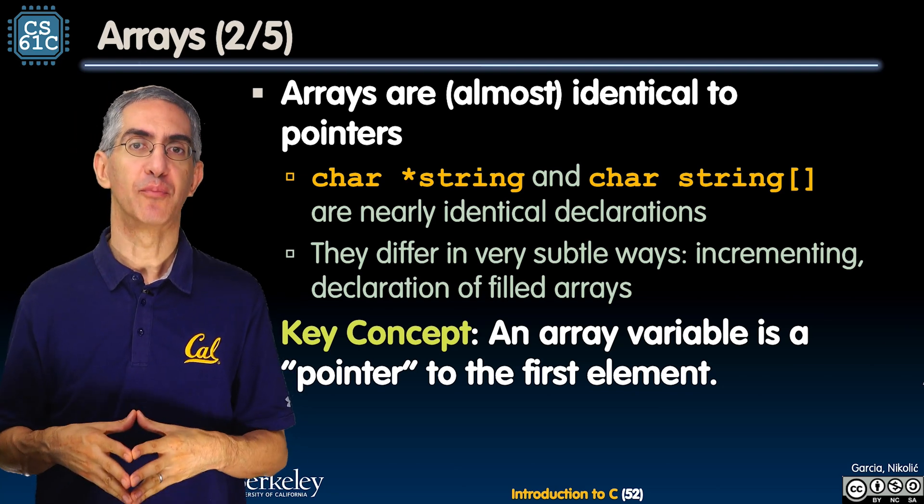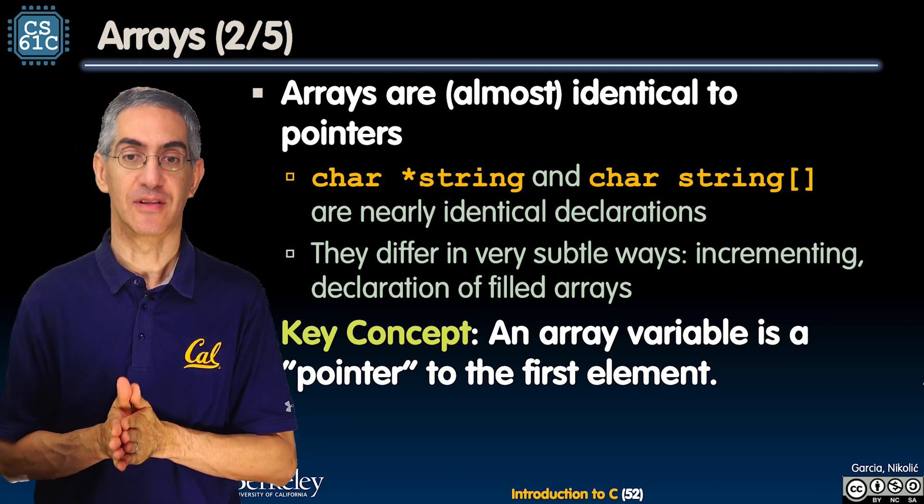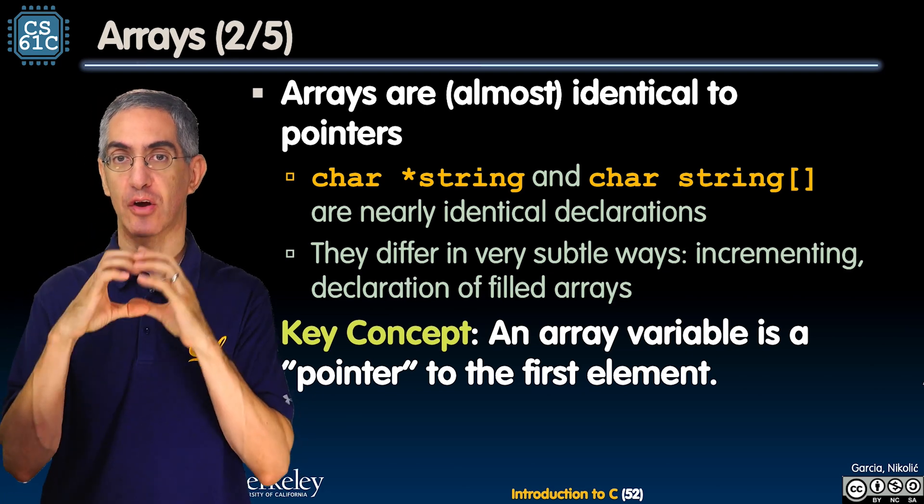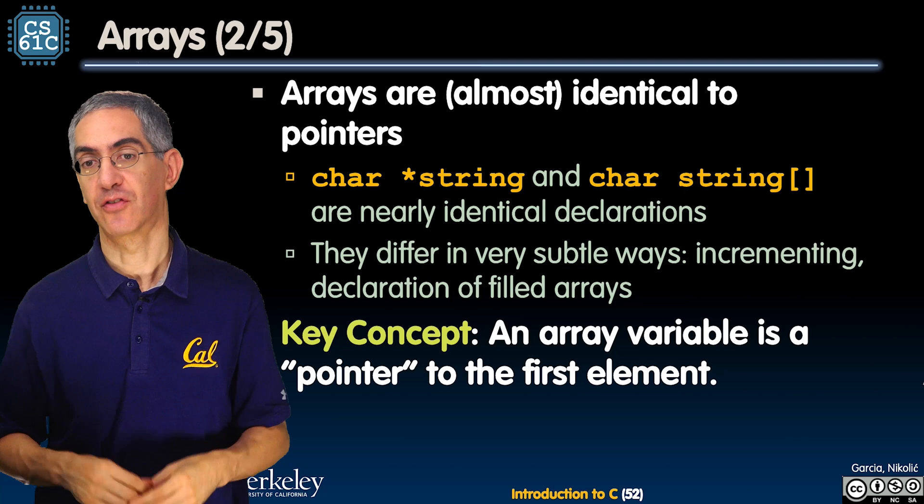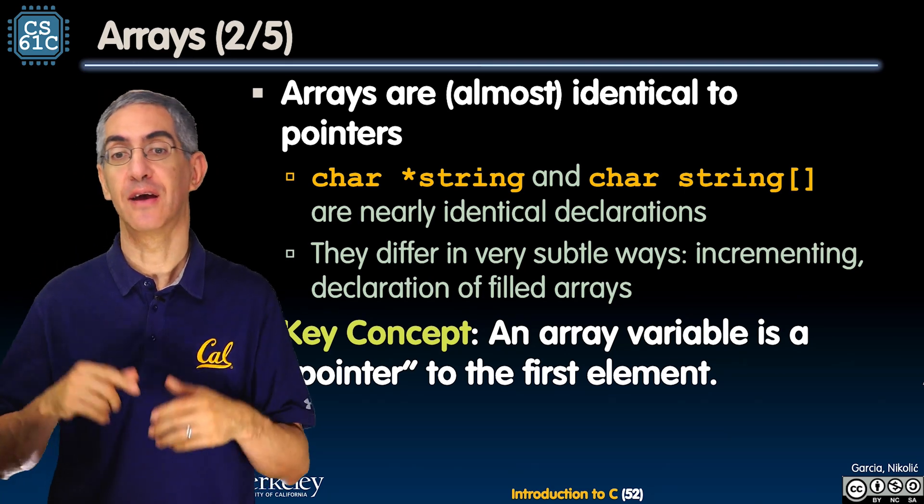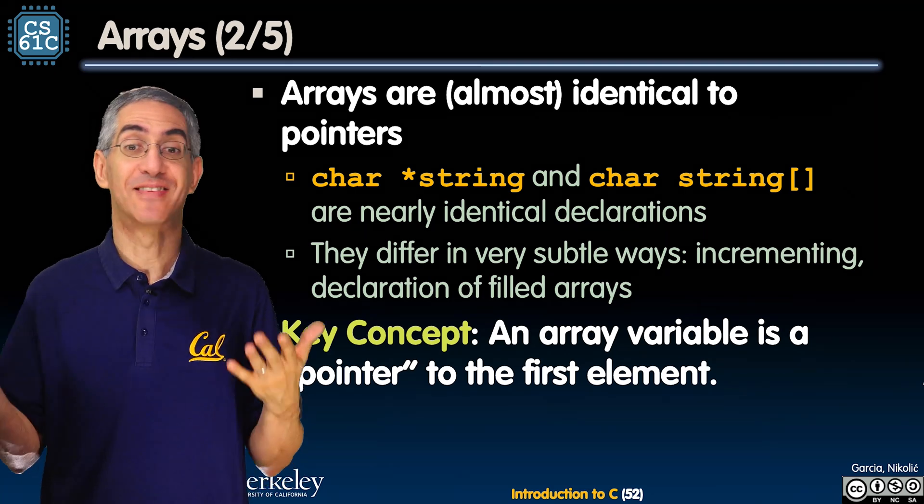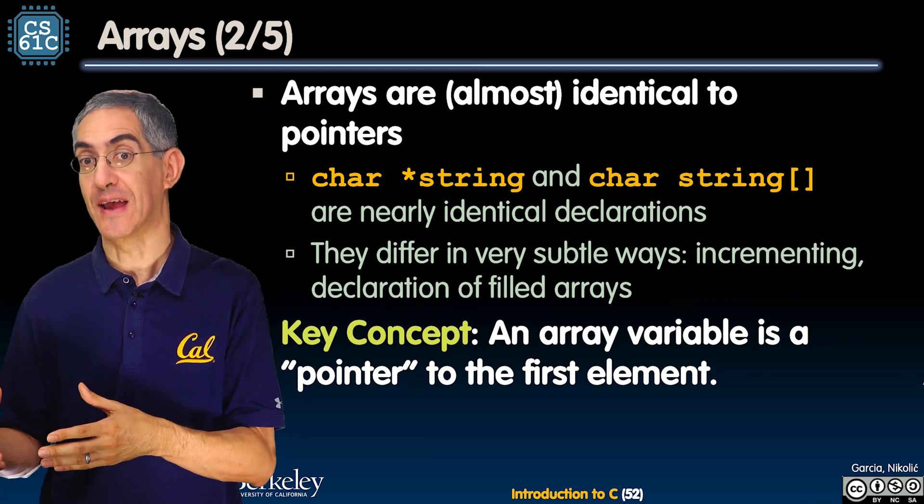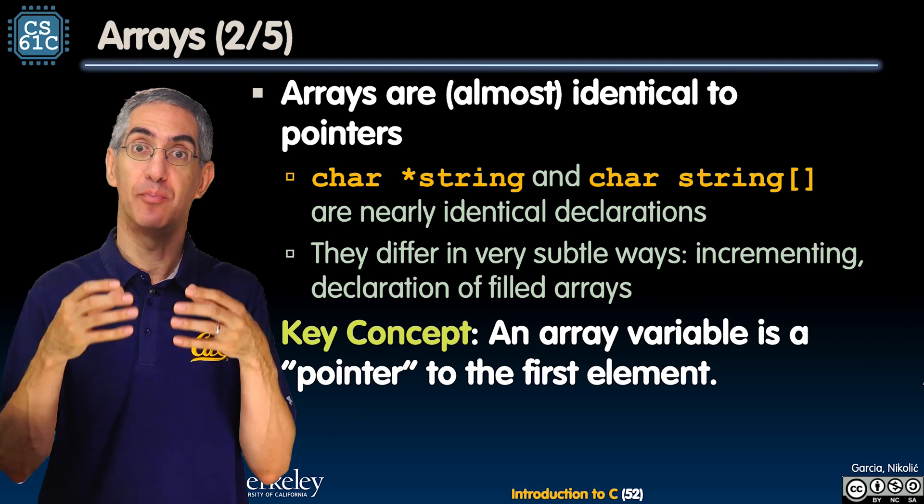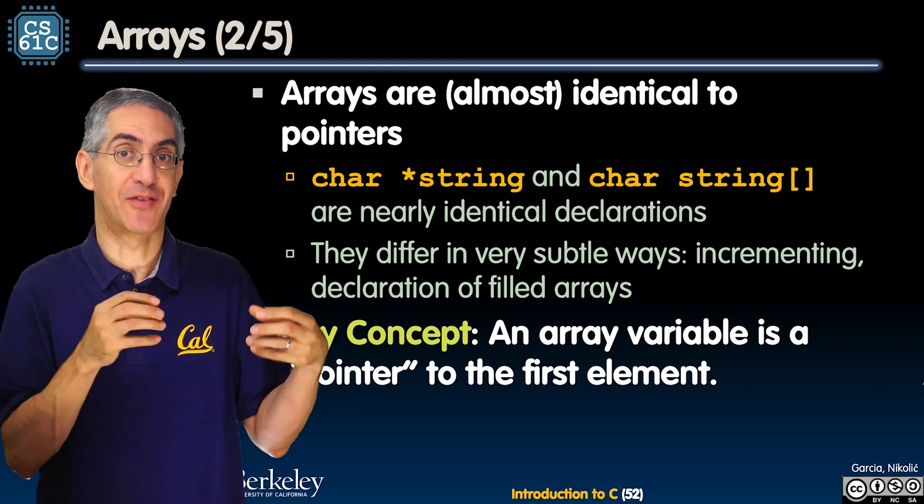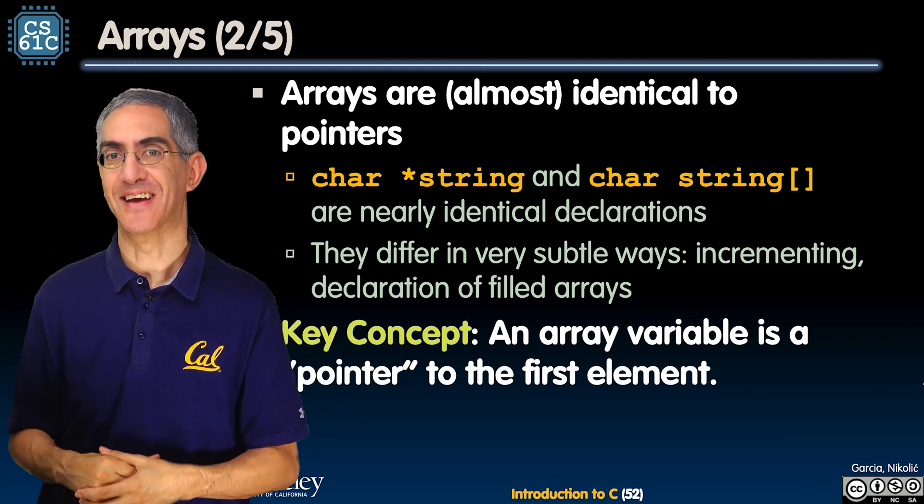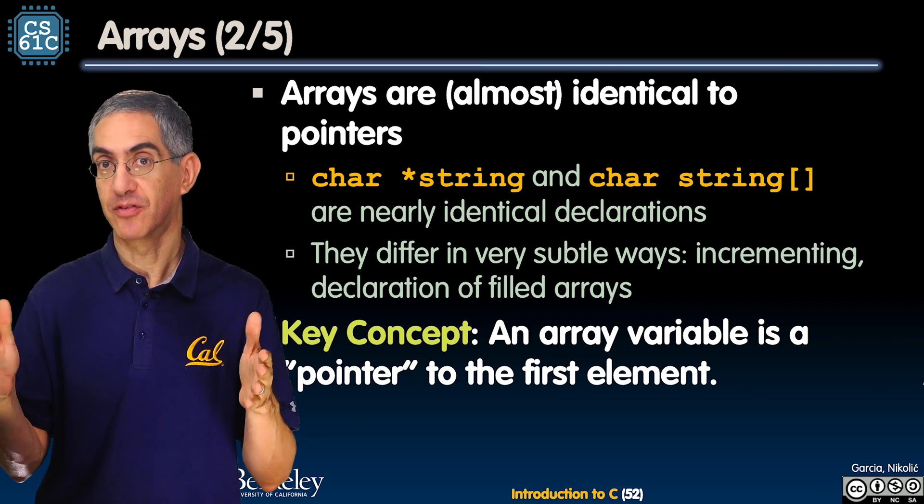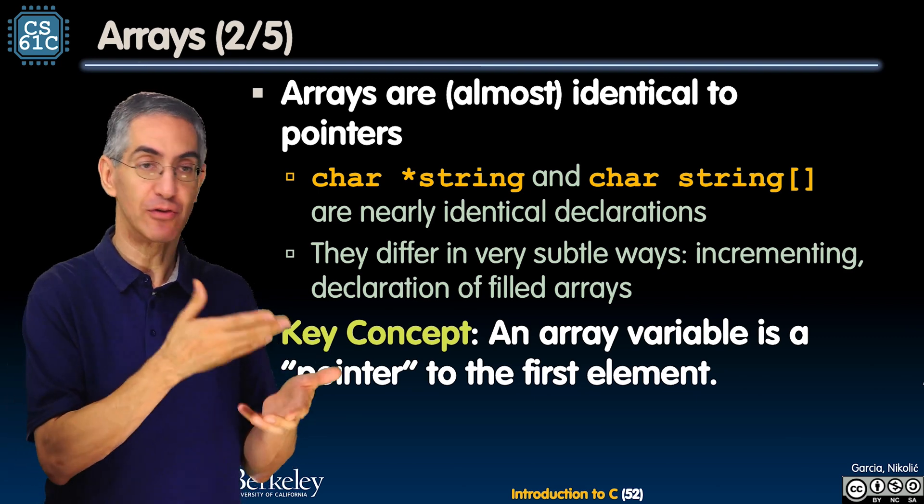So mostly arrays and pointers are identical actually. If I say char *string or char string[], the first says that string is a pointer to a character array, and the second says that string is an array. So first is string is a pointer to a contiguous block of characters, and the second is that string is a character array. They're nearly identical. People often confuse them in the way they describe them.